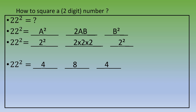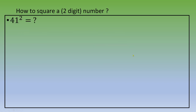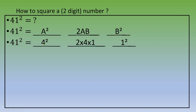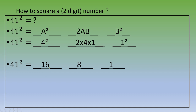Let's take another example: 41 squared. Using the same method, this gives 4² for group 1, 2×4×1 for group 2, and 1² for group 3 — that's 16, 8, and 1. Note that a two-digit number can appear in group 1; group 1 is the only place where you can end up with a 2 or 3-digit number.